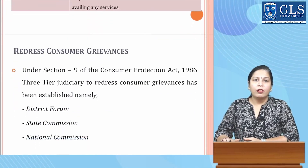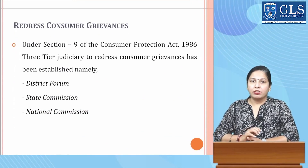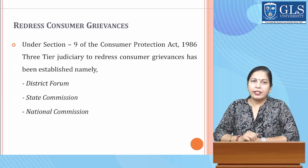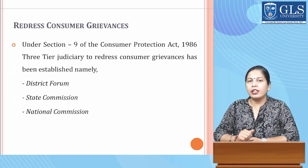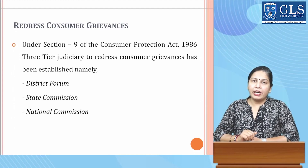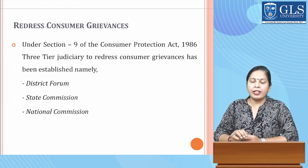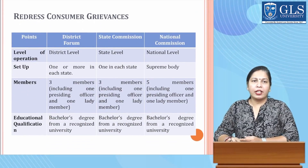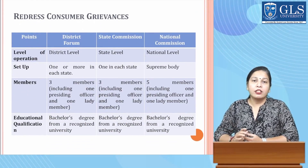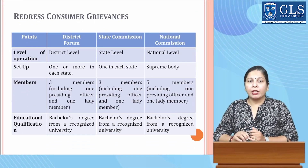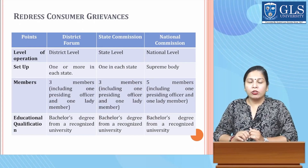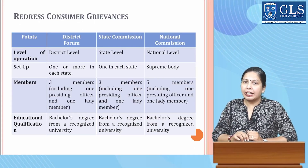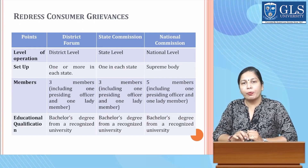Under Section 9 of the Consumer Protection Act 1986, there is a three-tiered judiciary to redress consumer grievances: the District Forum, the State Commission, and the National Commission. At the district level there are one or more forums per state, one State Commission per state, and the National Commission is the supreme body. Each tier has three members at district and state levels, and five members at the national level. In district and state tiers, one member is the presiding officer and one must be a lady member.